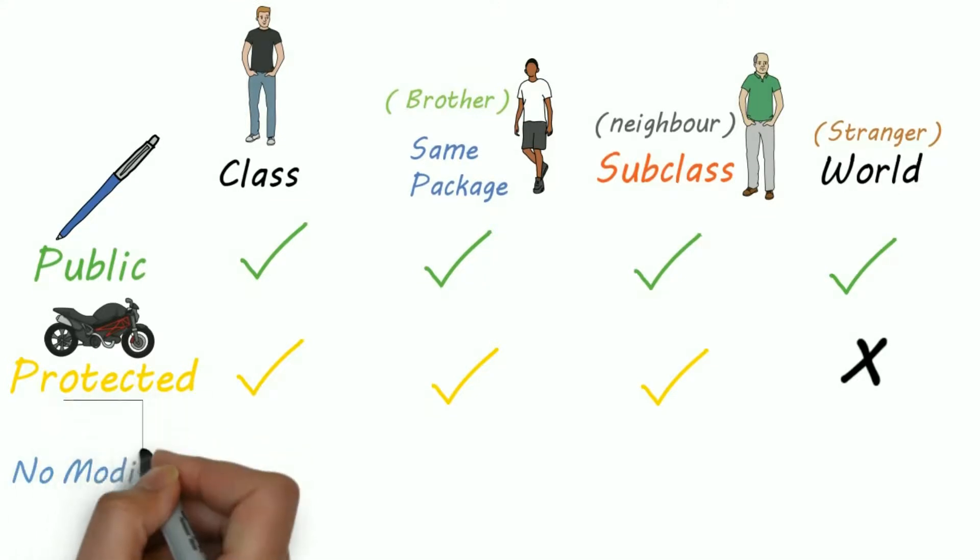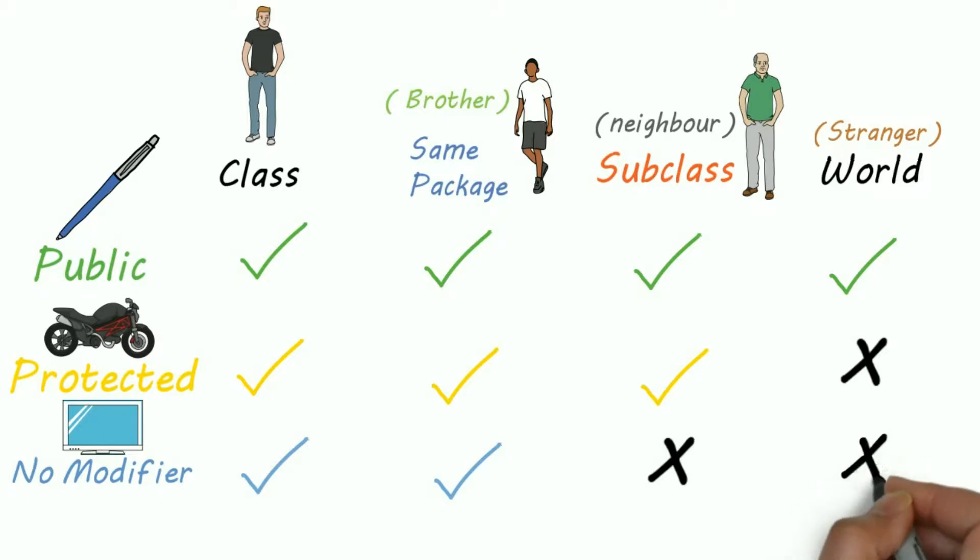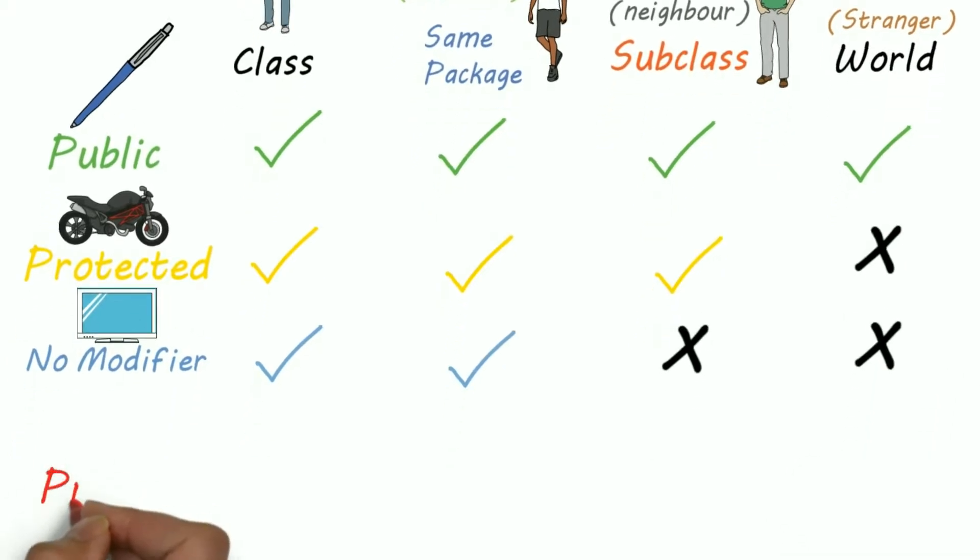No modifier. No modifier means just common sense. For example, you will not use any modifier for your TV. Definitely you and your brother can use that TV because it's in your house, but I don't think you'll like to give your TV to your neighbor or any stranger.